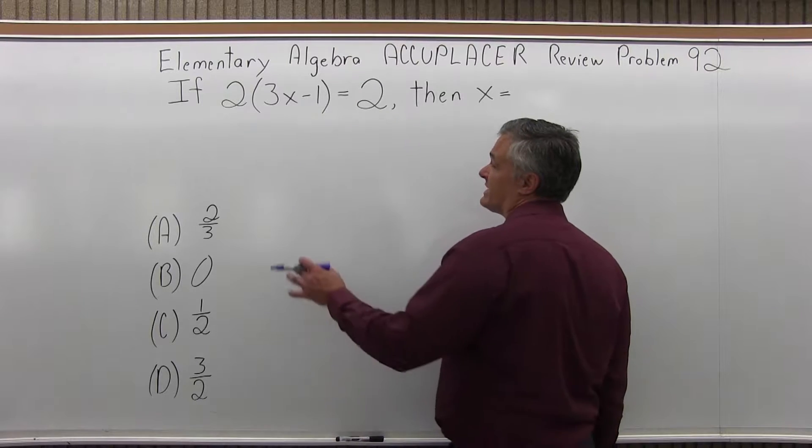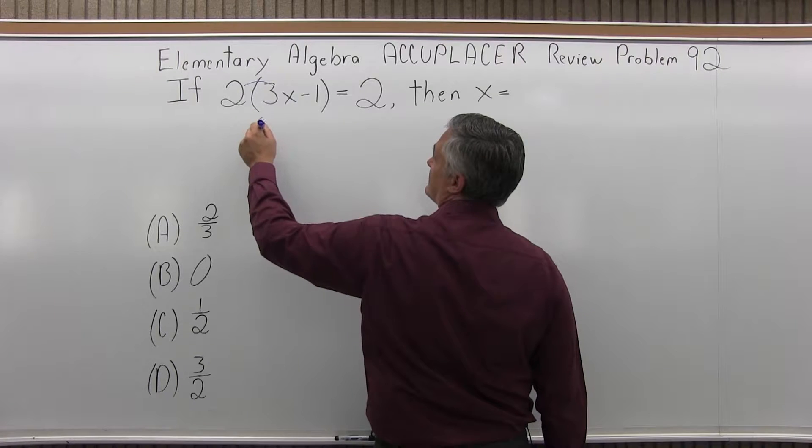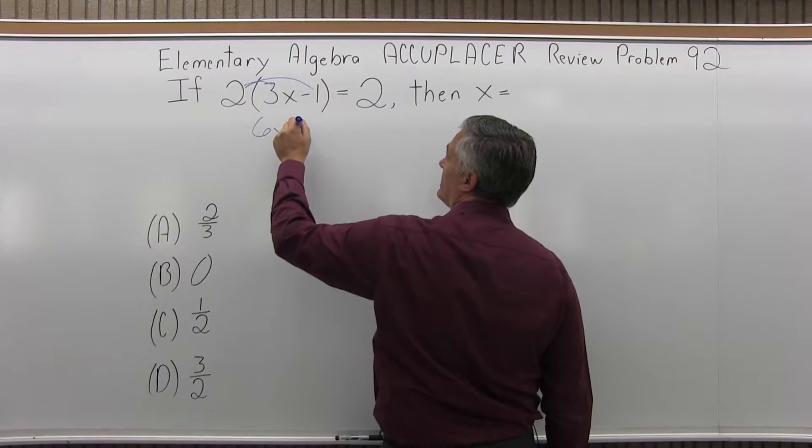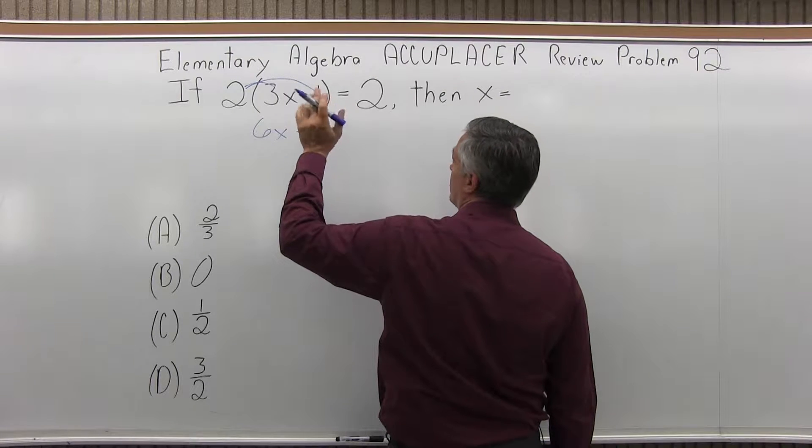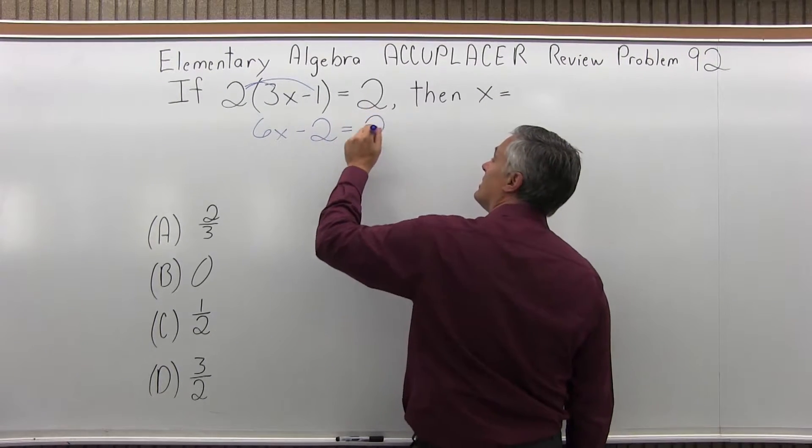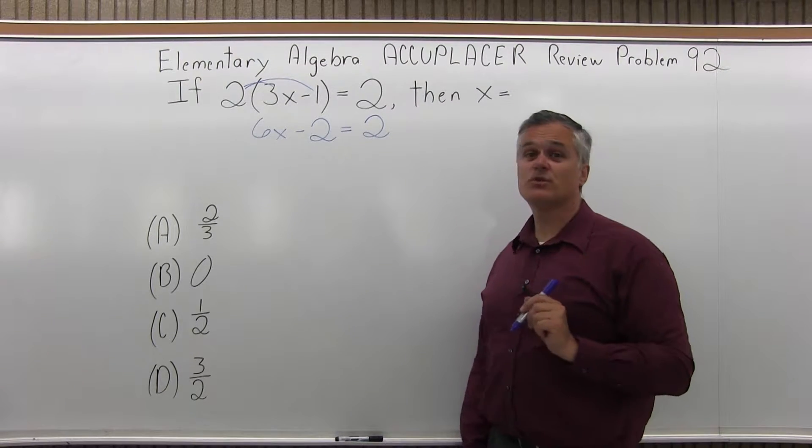So first thing I'd like to do is clear out the parentheses. So 2 times 3x is 6x, and then 2 times minus 1 is minus 2. Again, you have to really pay attention to the signs. Minus 2 makes a big difference. And on the right side, we just have 2. So 6x minus 2 equals 2.